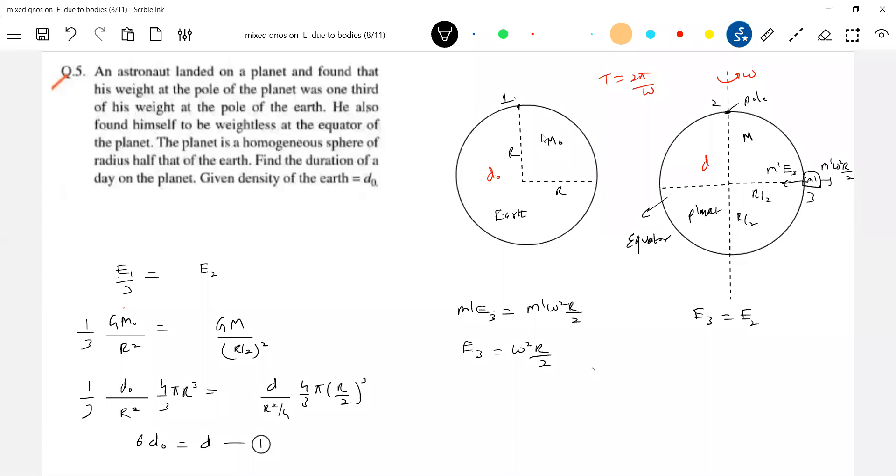Now tell me the answer. Equation 1: 2 by 3 d0. There's a condition - what is E3 value? E3 value is nothing but equal to E2. Substitute that and get the omega, you'll get the required answer. What is E3? E3 should be equal to E2, so this will be gm by r by 2 all square.